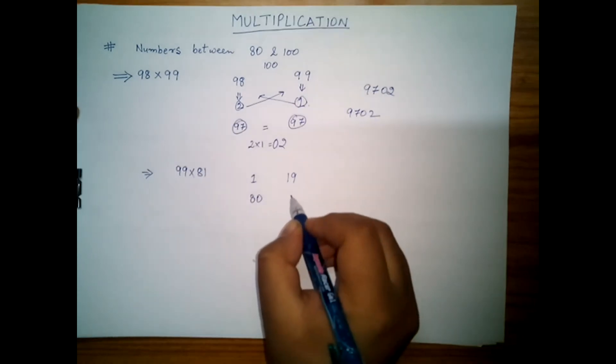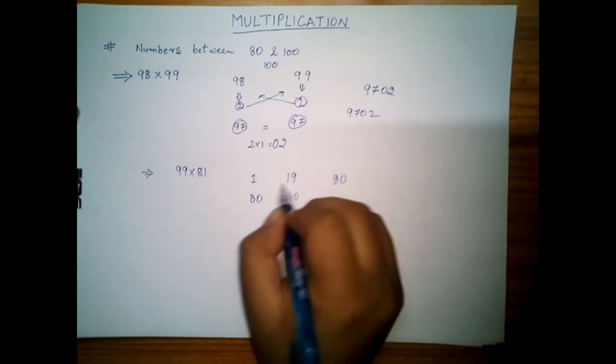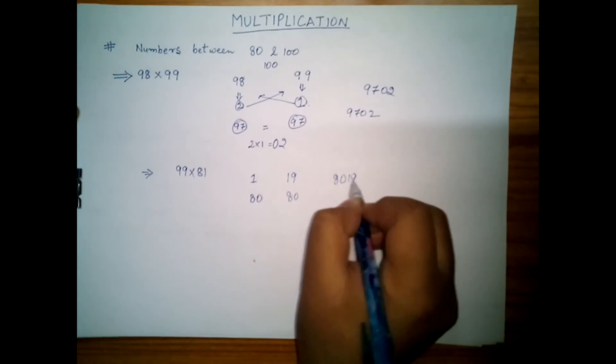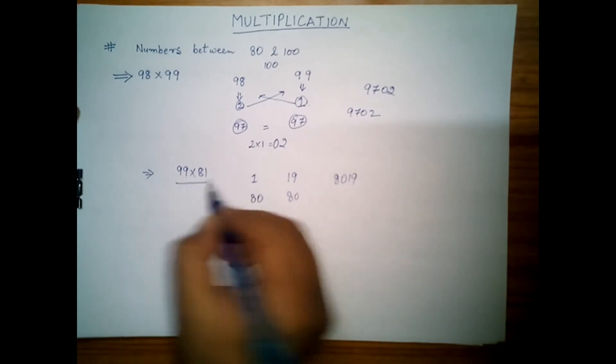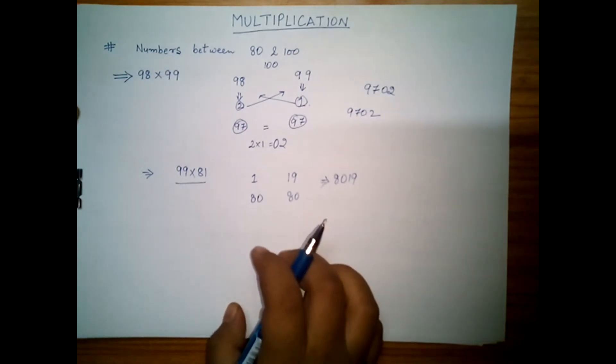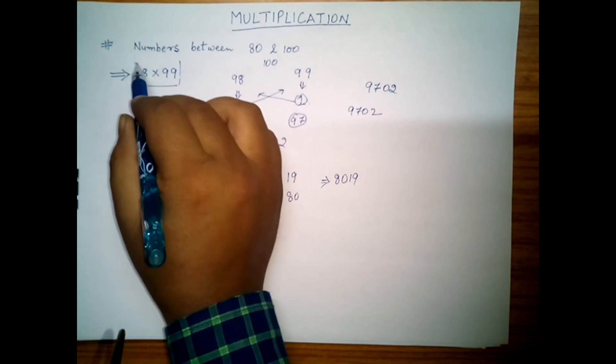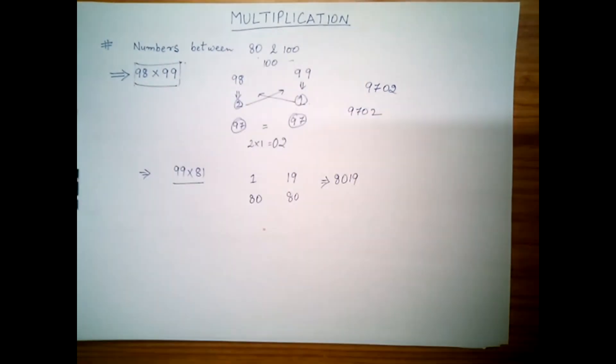So the first two digits will be 80. The last two digits come from 1 times 19 equals 19. After practicing this trick, you can easily multiply two numbers which are between 80 and 100.